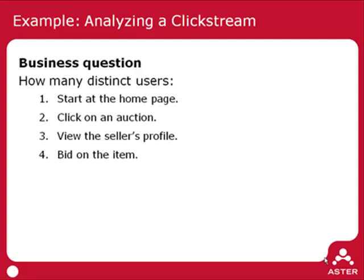So the business question is: given a series of clicks in the database, tell me how many distinct users follow a particular path. In this case, we have a path motivated by an auction site. So let's say: how many distinct users start at the homepage, click on an auction, view the seller's profile, and then finally bid on an item.